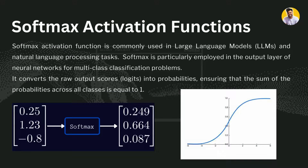The first thing is the softmax activation function. It is largely used in large language models because it takes the values from the hidden layers and transforms those values into a probability distribution. It is basically used in multi-class classification problems when your target variable has multiple classes, and it tells you which class has the highest probability — that will be your answer.